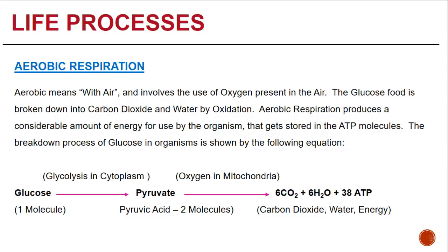The breakdown of glucose in organisms is shown by the following equation. One molecule of glucose produces two molecules of pyruvate or pyruvic acid through the process of glycolysis in the cytoplasm. With oxygen in the mitochondria, this then produces carbon dioxide, water, and energy.